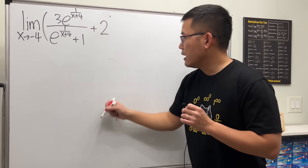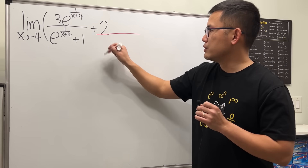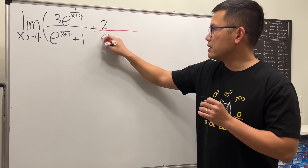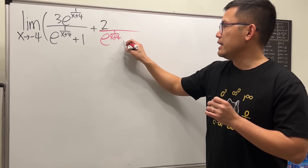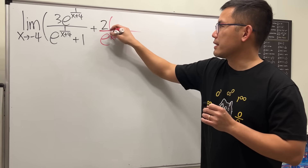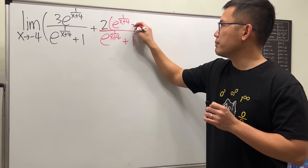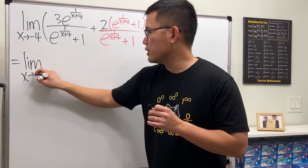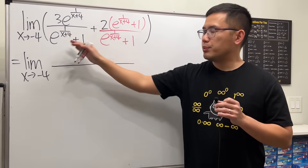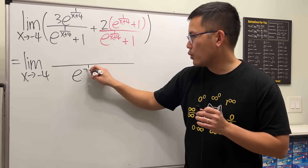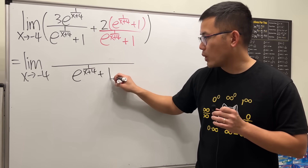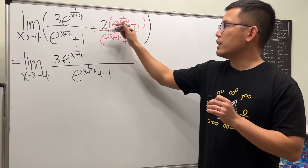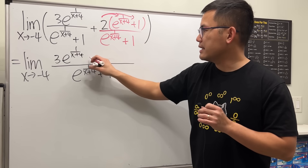For the two right here, let's multiply the top and bottom — the denominator is e to the one over x plus four. After that we have plus one, multiply the same thing on top: e to the one over x plus four, plus one. So this will be the limit as x approaching negative four, put on the same denominator. Here we have three e to the one over x plus four, and distributing the two gives us plus two e to the one over x plus four, plus two.